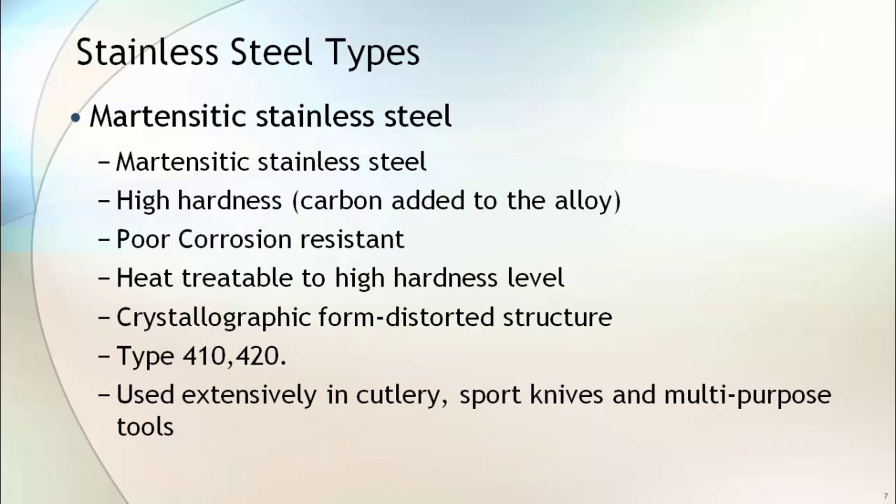Martensitic stainless steel has very high hardness. It is magnetic in nature and has poor corrosion resistance compared to austenitic stainless steel. Due to its high hardness, it is used in the manufacturing of sport knives and multipurpose tools. Type 410 and 420 are examples of martensitic stainless steel.